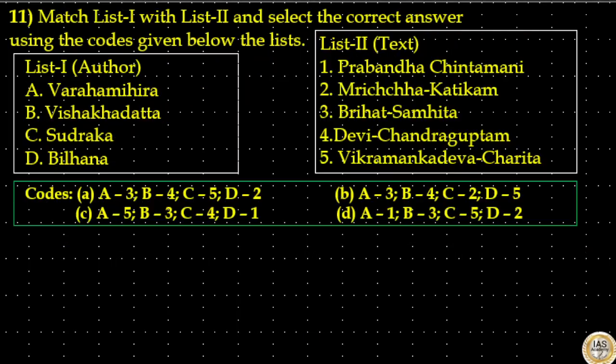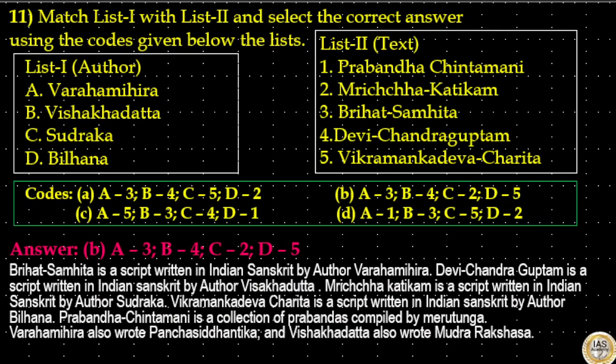Match list one with list two and select the correct answer using the codes given below. Brihatsamhita is a text written in Sanskrit by author Varahamihira. Devi Chandraguptam was written by Vishakhadatta. Mricchakatikam was written by Shudraka. Vikramankadevacharita was written by Bilhana. Prabandha Chintamani is a collection of Prabandhas compiled by Merutunga. Varahamihira also wrote Panchasiddhantika, and Vishakhadatta also wrote Mudrarakshasa. The answer to this question is option B.